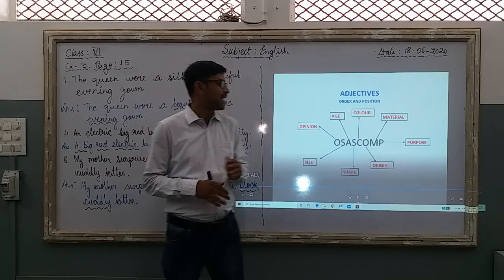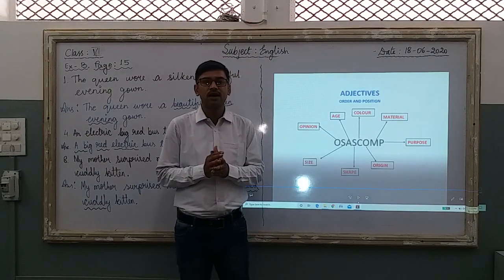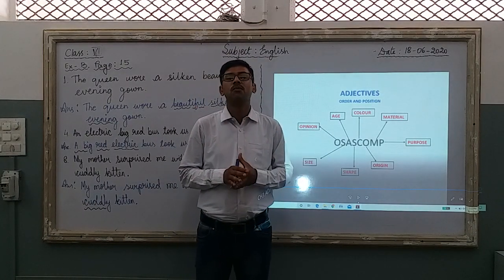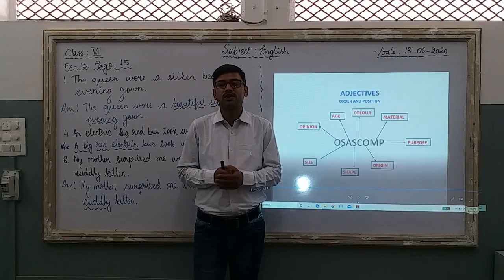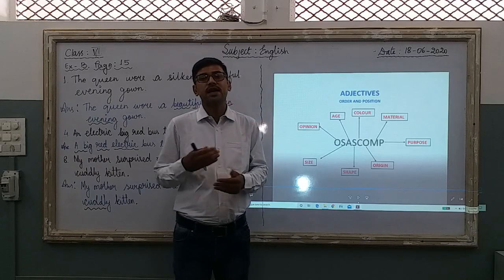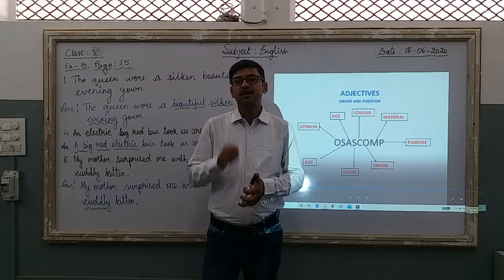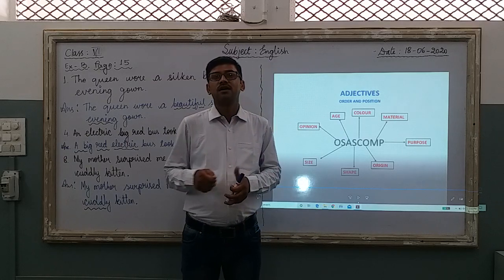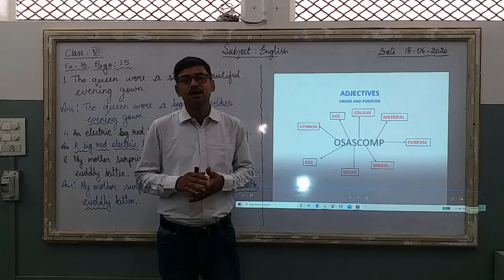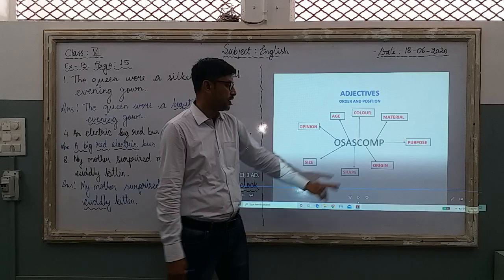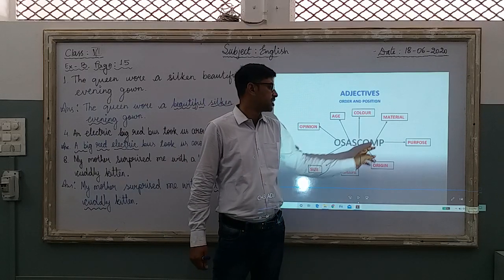Now, what is origin? For example, 'I met a Spanish boy' — the origin of that boy is where he comes from. The boy is coming from Spain. 'I have dinner with a Swiss spoon' — the spoon has come from Switzerland. So that is known as origin. Whenever we talk about adjective origin, it basically means where something comes from.